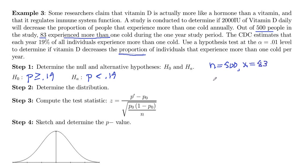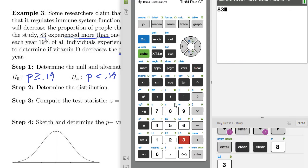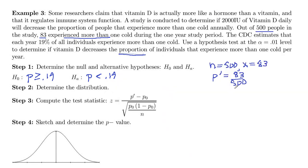So then that means that your p prime is going to be 83 divided by 500. So let's compute that. 83 divided by 500 is 0.166.